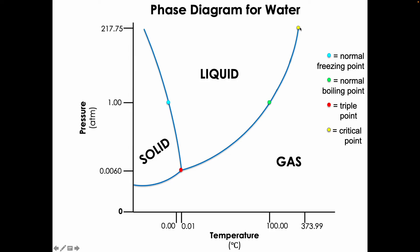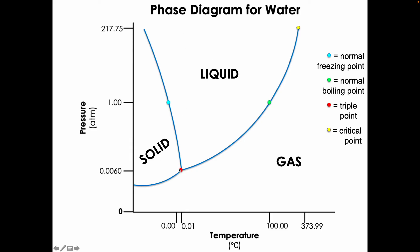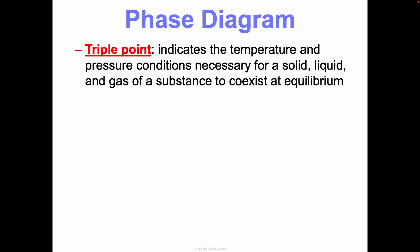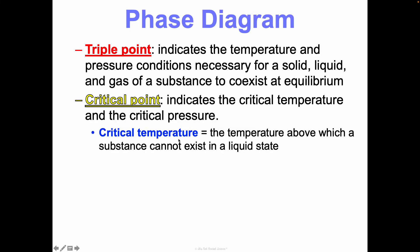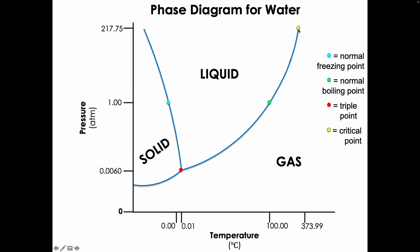The triple point indicates the temperature and pressure conditions at which solid, liquid, and gas of a substance coexist at equilibrium — for water, that's 0.006 atm and 0.01°C. The critical point indicates the critical temperature — above which a substance cannot exist as a liquid — and the critical pressure, which is the lowest pressure at which a substance can exist as a liquid at the critical temperature.